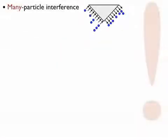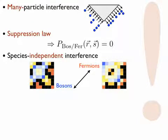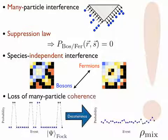In our article, we treat general many-particle scattering setups that describe, for example, the interference of photons and of cold atoms. We formulate a suppression law that allows us to characterize the indistinguishability of many particles in a particular setup. We also discuss why many-particle interference is widely species independent, and how the familiar statistical behavior of bosons and fermions eventually emerges when the coherence of the initial state is lost.